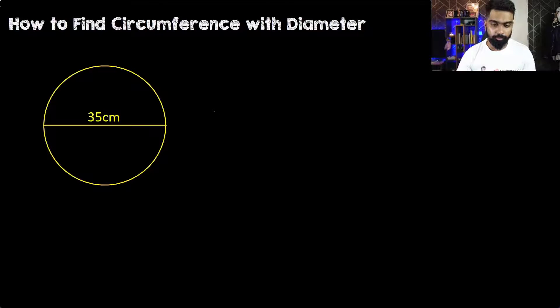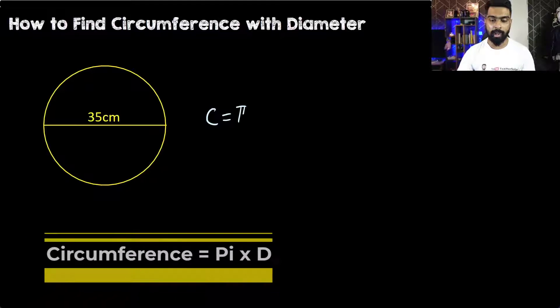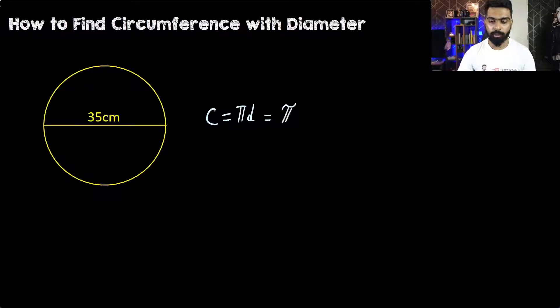First of all, let's start with the formula. The formula to find the circumference is C = πd. This means we take the value of pi and multiply it with d.